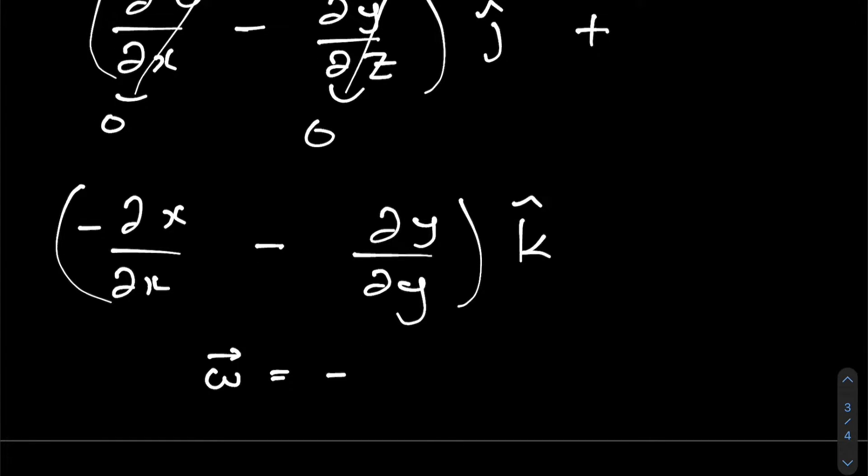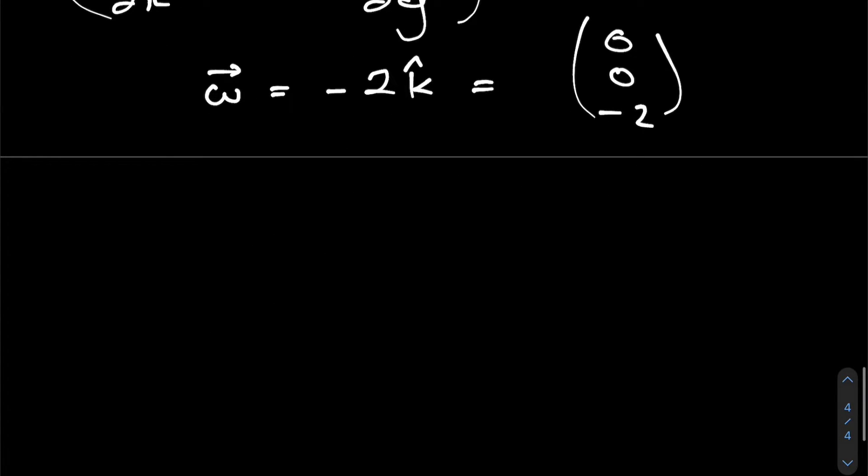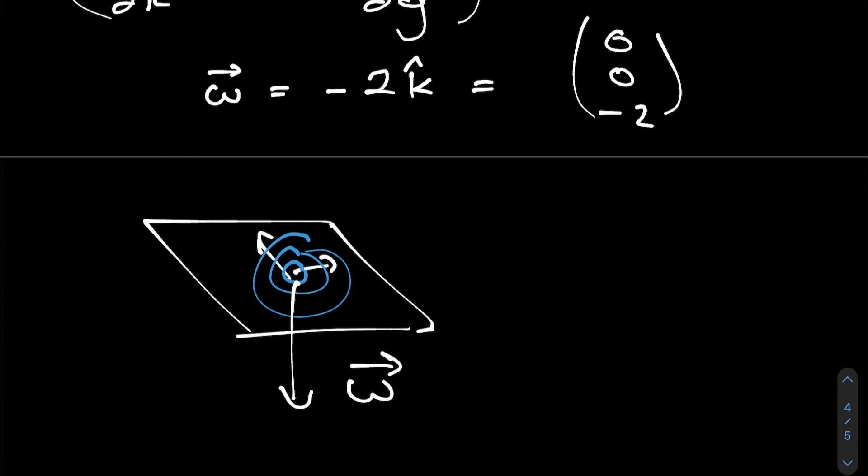Finally, we're going to have the derivative with respect to x of minus x minus the derivative with respect to y of y, multiplied by k hat. And this is our only non-zero component. So our vorticity is just minus two k hat, or in column vector notation, zero, zero, minus two. And a vector like this makes sense because if this is the xy plane viewed from an angle where our fluid is spinning in, our vorticity is going to point straight along the negative z-axis, which agrees with our right-hand rule.